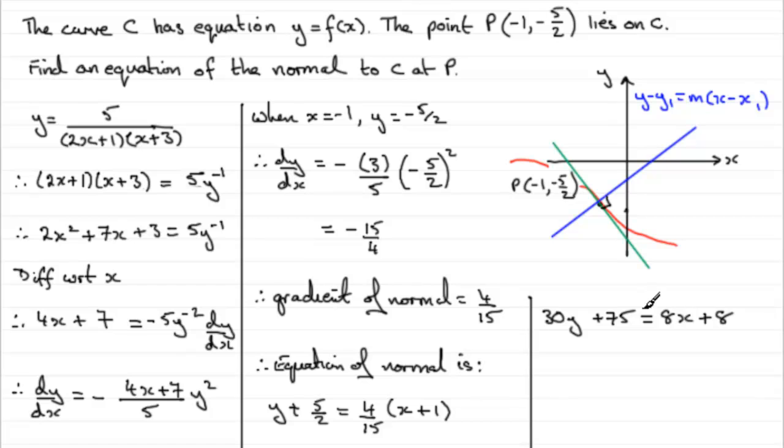And what I'm going to do now is just rearrange this in the form ax plus by plus c equals 0. In other words, we therefore have 8x minus 30y, and if we take 75 from the 8, we're left with minus 67, and that will equal 0. So there's another form for the equation of the normal.